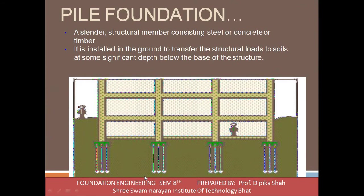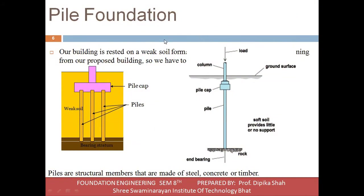A pile is a slender structural member consisting of steel, concrete, or timber. It is installed in the ground to transfer a structural load to soils at some significant depth below the base of the structure. In the pile, different materials are used — like concrete, timber, and steel. When our building rests on weak soil, we construct piles, which are structural members made of concrete, steel, and timber.